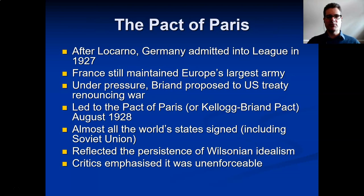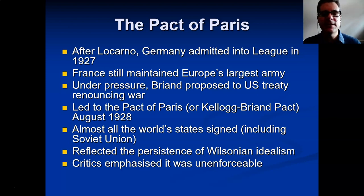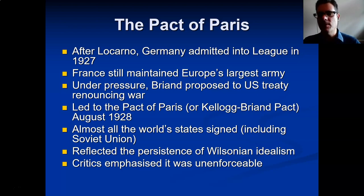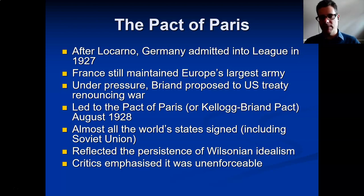Mid-1920s seemed to bring improvement: the world economy was beginning to recover and political stability was apparently returning to Europe, with the Weimar Republic looking more stable. But beneath the surface the situation was not entirely healthy — notably the United States remained quite protectionist, with significant tariffs protecting its home market, which dampened international trade. Towards the end of the 1920s, the Pact of Paris — the Kellogg-Briand Pact — could be seen as evidence that Wilsonianism was not dead. Very simply, it was an agreement that countries would not resort to war to resolve disputes, eventually signed by virtually all major states including Germany and the Soviet Union. The problem, of course, was that it was basically unenforceable.